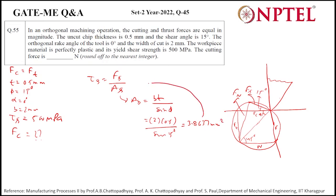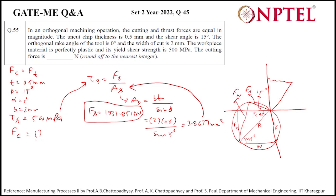Putting this value of As into the equation, Fs equals τs times As. With τs = 500 MPa and As = 3.8637 mm², we get Fs = 1931.85 N. The total angle from the shear force to the resultant is 60 degrees (15° + 45°), so from Fs = R·cos(60°), the resultant force R = 3863.70 N.